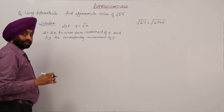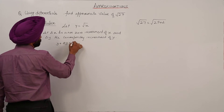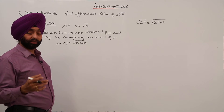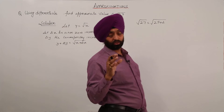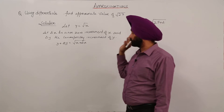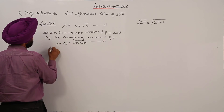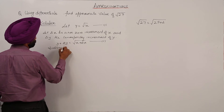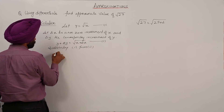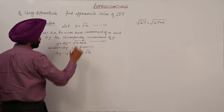Adding delta y and delta x to y and x respectively, we have y plus delta y equals square root of x plus delta x. Note that if x is inside the square root, you add delta x inside the square root, not outside. Subtracting equation 1 from equation 2, delta y equals square root of x plus delta x minus square root of x.